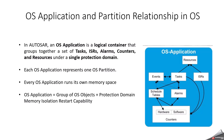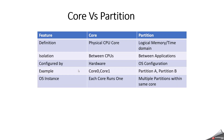Each OS application represents one OS partition, and every OS application runs in its own memory space. An OS application means a group of OS objects plus a protection domain, memory isolation and restart capability. This additionally provides memory protection, fault containment, and support for freedom from interference per ISO 26262. Inside each ECU — that means multi-core MCUs — the Autosar OS runs multiple OS applications. Each OS application represents a software unit that can be isolated, restarted or protected individually. For example, on Core 1 you can have two OS applications: one for safety and one for non-safety. Both applications run under the same Autosar OS kernel instance but are isolated.